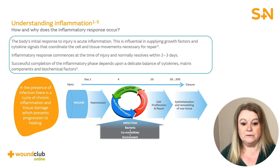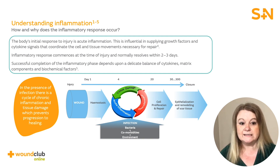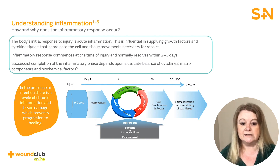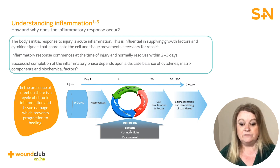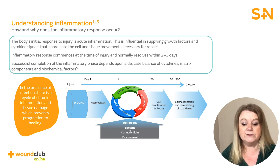The second phase of wound healing is acute inflammation, which is part of the body's own natural defence system. It starts at the time of injury and normally resolves within two to three days. Inflammation is crucial in supplying growth factors and cytokine signals that coordinate the movement of cells. Once the bleeding has stopped, the blood vessels within the wound dilate, allowing fluid to carry the cells needed for the wound healing process. The main cells involved perform phagocytosis, meaning they can ingest and destroy harmful particles, bacteria and dead cells.